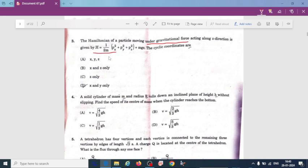The Hamiltonian of a particle moving under gravitational force acting along z direction is given by H is equal to 1 divided by 2m px square py square pz square plus mgz. So the cyclic coordinates - here we have taken the gravitational force acting along z direction. Then the cyclic coordinate must be along x and y only. Option D is correct here.